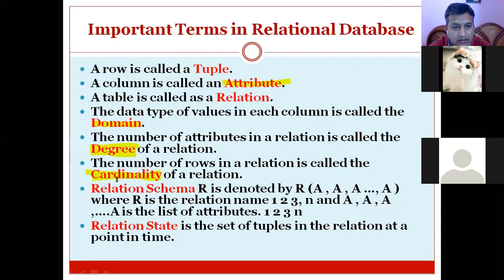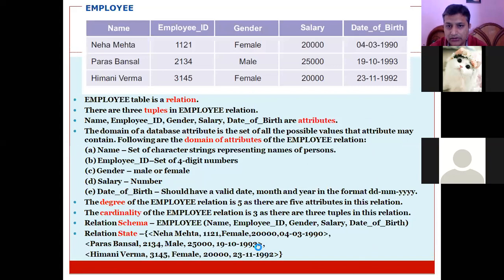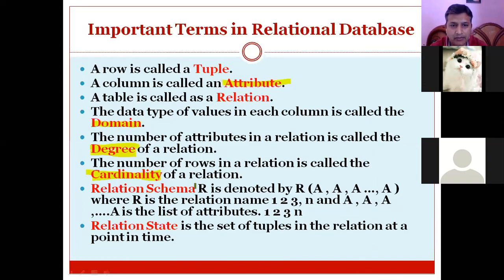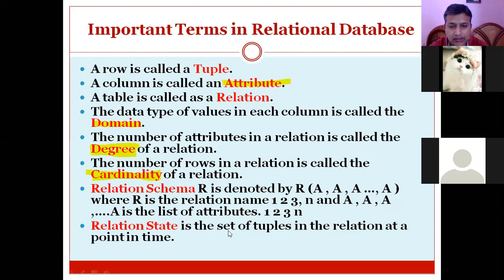There is another term called relational schema — this is how we describe the structure of a table. Then there is relational state — this is the set of tuples in a relation, meaning all the rows present in a table combined are called the relational state. In the employee table, the relation is 'employee,' there are three tuples — row one, row two, row three — and the attributes are Name, Employee ID, Gender, Salary, and Date of Birth.